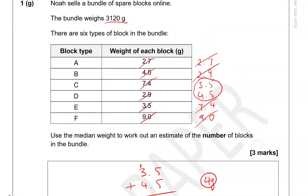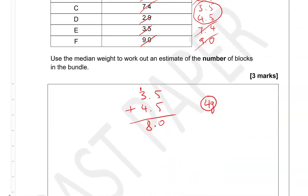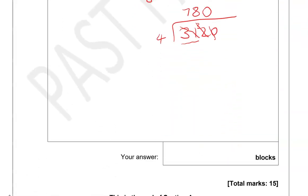And that is 3,120. If I divide that by 4, we can estimate the number of blocks. So, how many 4s would fit into 31? That would be 7, because 7 times 4 is 28. So, we have 3 remaining. How many 4s into 32? That's 8, because 8 times 4 is 32. So there is nothing remaining. How many 4s into 0? That's just 0. And there is nothing remaining, because 0 times 4 is 0. So, 780 blocks. That's the answer.